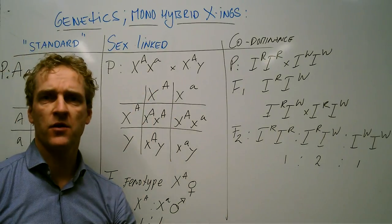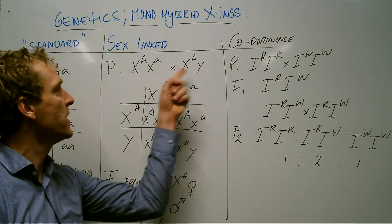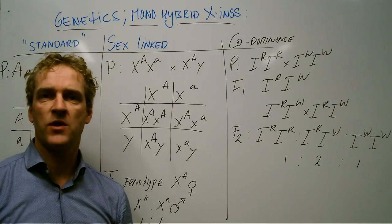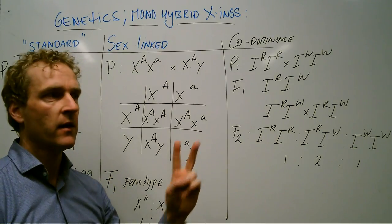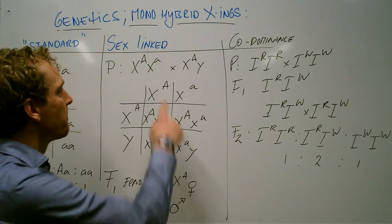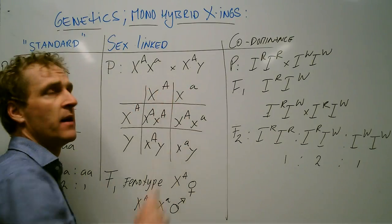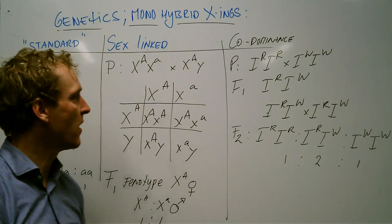She has a dominant allele so she sees color just as fine as he does and a recessive one and so she's a carrier. You can only be a carrier if you carry two alleles. So she's a carrier and he certainly is not. You can see color just as fine.